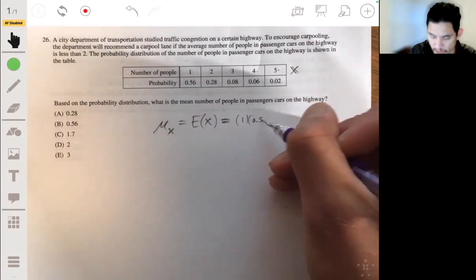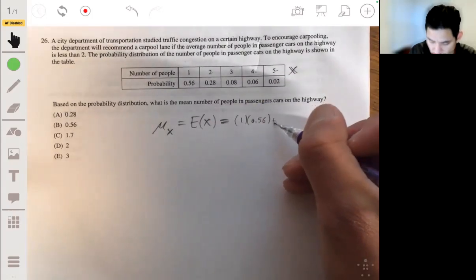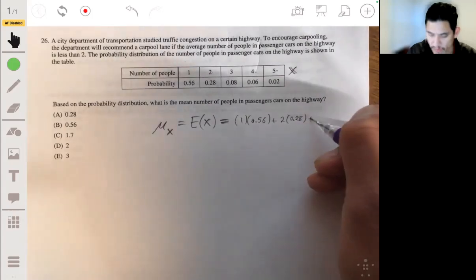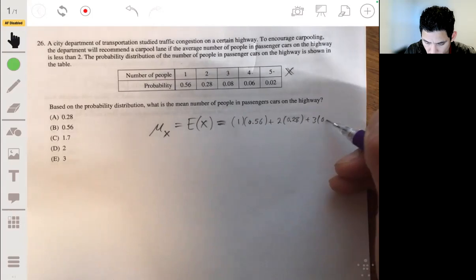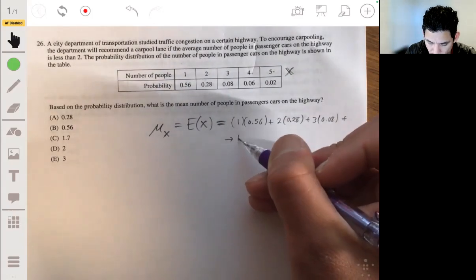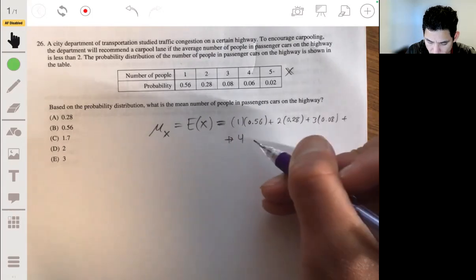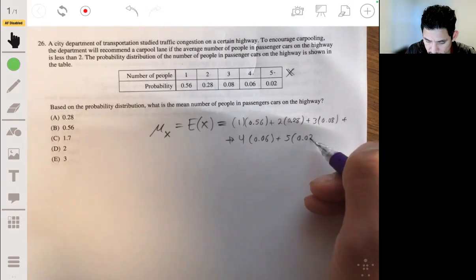You sum all of them up. 1 times 0.6 plus 2 times 0.28 plus 3 times 0.08 plus 4 times 0.06 plus 5 times 0.02.